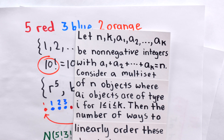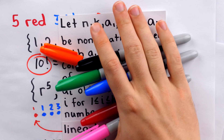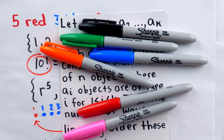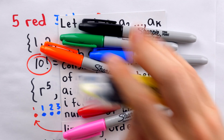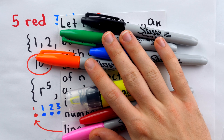So that's how to count the number of linear orderings of multi-sets — those are sets with duplicate objects. Let me know in the comments if you have any questions, and be sure to subscribe for more math videos.